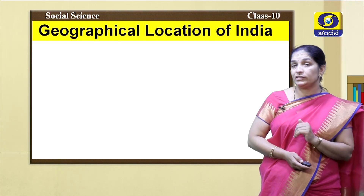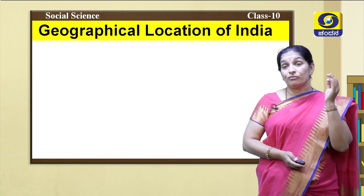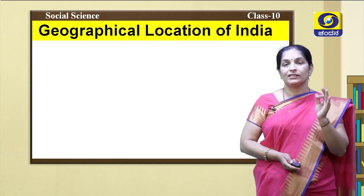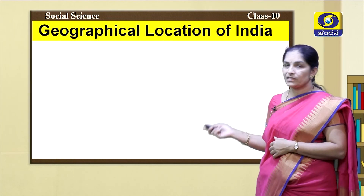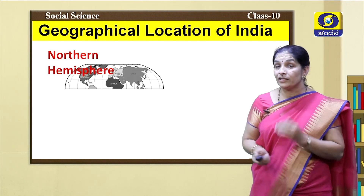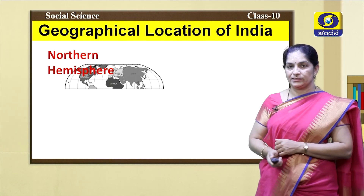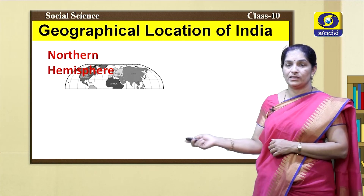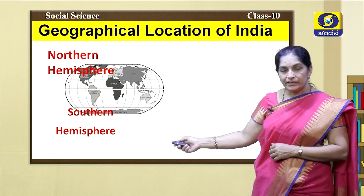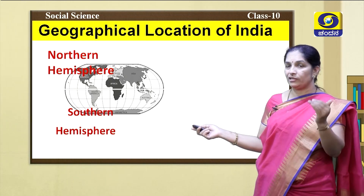Now let us know the geographical location of India — what is the location of India on the earth. Observe this picture. This is the northern hemisphere, from 0 degree to 90 degree north, and from 0 degree to 90 degree south is the southern hemisphere. We have already learnt this.